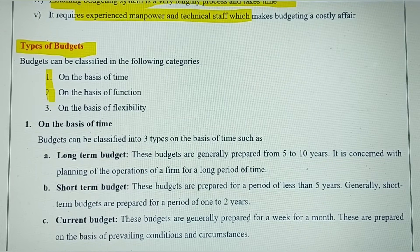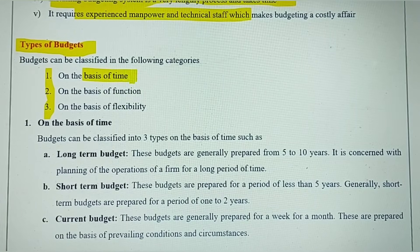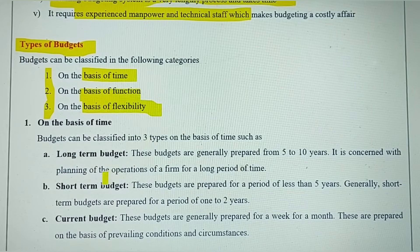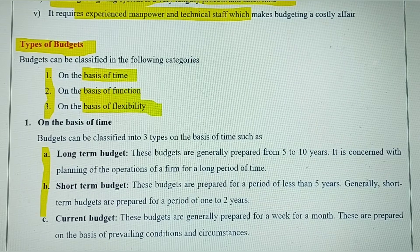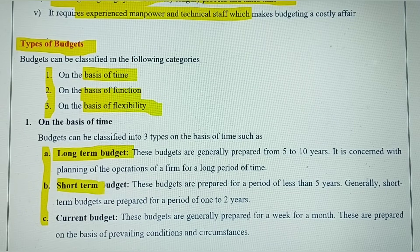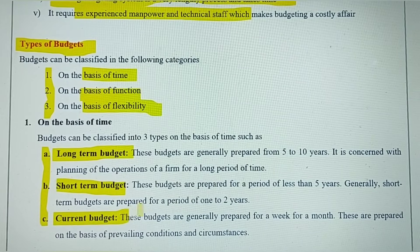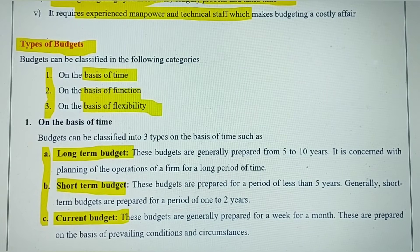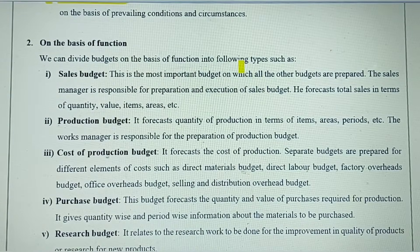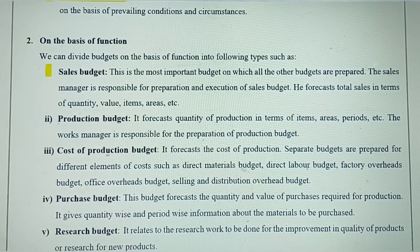Different types of budgets can be classified on three bases. On the basis of time: long-term budget (5 to 10 years), short-term budget (generally less than five years), and current budget (prepared for a week or a month). On the basis of functions: sales budget, production budget, cost budget, purchase budget, research budget, and marketing budget. On the basis of flexibility: fixed budget and flexible budget — where changes can be made as and when required.